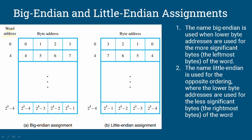If you look at big endian, the byte order is 0, 1, 2, 3, 4, 5, 6, 7. In little endian, the order is different. The definition: in big endian, the lower byte address stores the MSB — the most significant bit. For example, in the byte 1010 1, the most significant bit is 1. In little endian, the lower byte address stores the LSB. That is the difference between big endian and little endian.